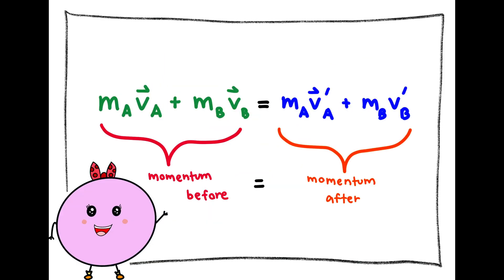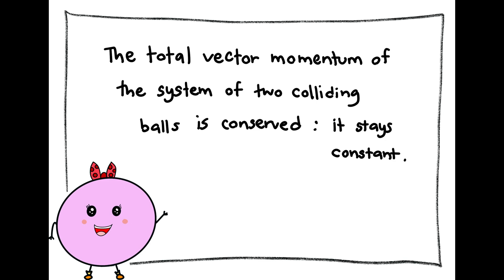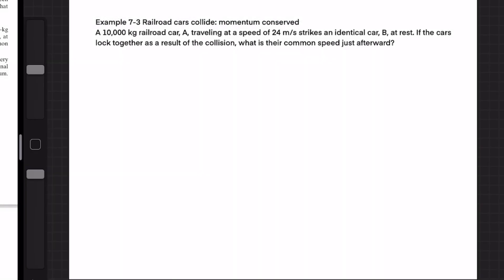The formula that we usually use is this one. The momentum before equals momentum after. The total vector momentum of the system of two colliding balls is conserved, meaning that it stays constant. So next we're going to be talking about the example question for momentum conservation.